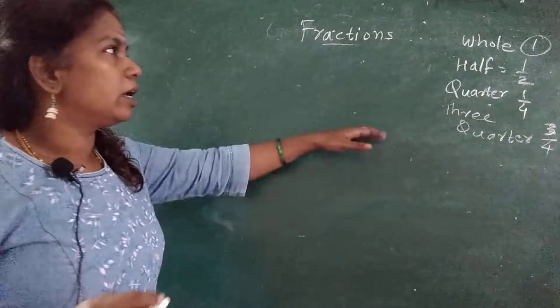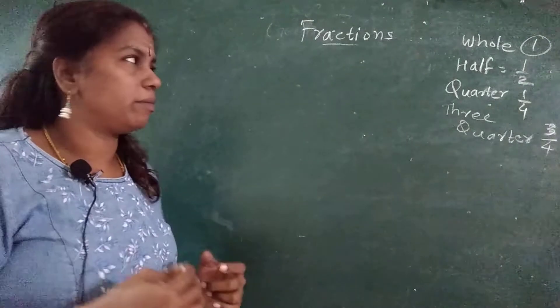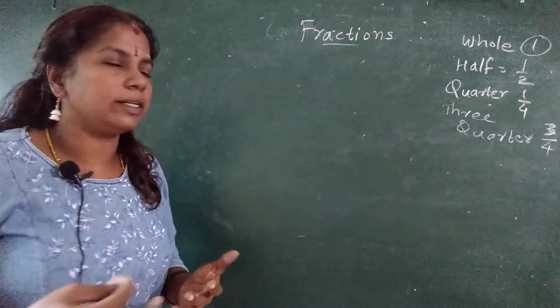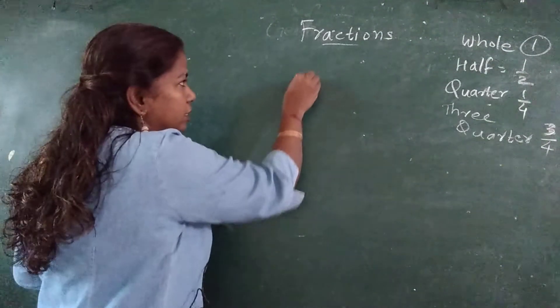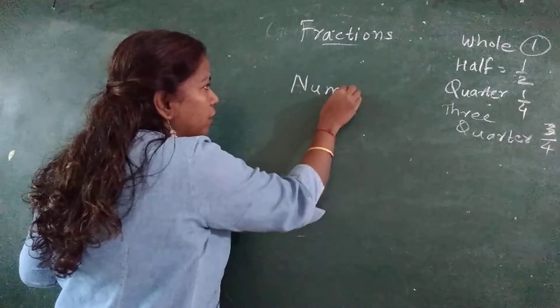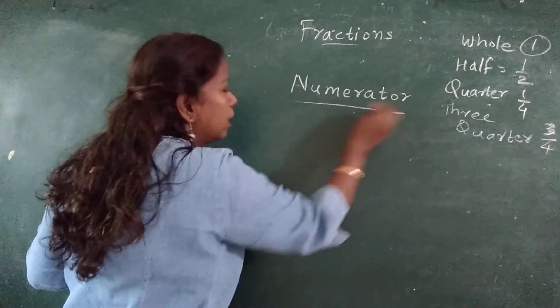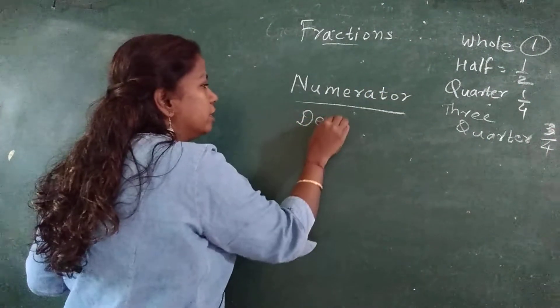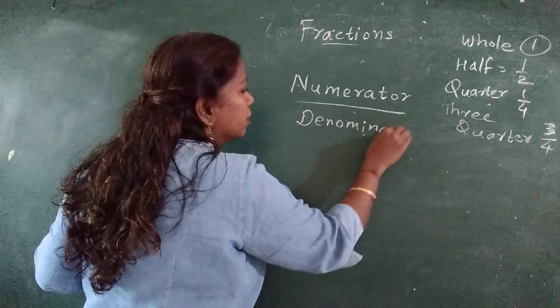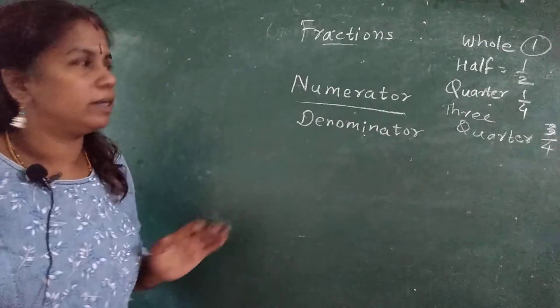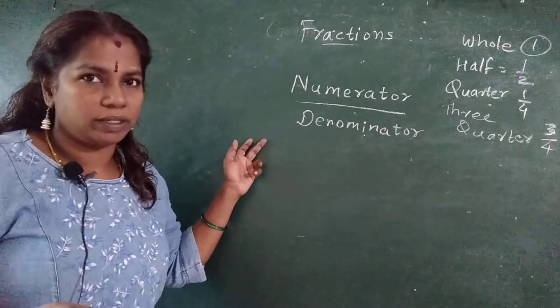I will go further. Now how I am writing, how a fraction is written as? A fraction is represented as numerator upon denominator. See the spelling? Numerator upon denominator. How you write? Numerator upon denominator.